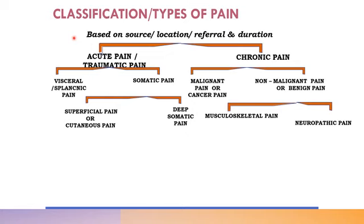The types of pain based on source, location, referral, and duration can be classified as follows. Acute or traumatic pain and chronic pain. Under acute pain, we have visceral (splanchnic) pain and somatic pain. Somatic pain pertains to skin and superficial structures, and within somatic pain we have superficial or cutaneous pain and deep somatic pain — which arises from muscles, tendons, joints, and bones. Under chronic pain, we have malignant (cancer) pain and non-malignant (benign) pain. Non-malignant includes musculoskeletal and neuropathic pain.